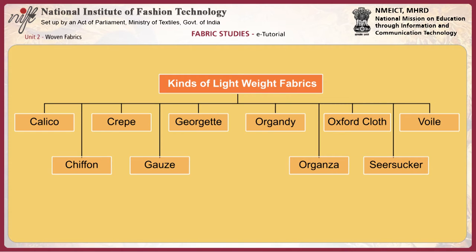Light weight fabrics are very thin and light, weighing less than 4 ounces per square yard. These fabrics, if made of natural fibres, are much softer and possess good drape. They are used for making tops like shirts, blouses, dresses, linings and home furnishings like bedsheets and sheer curtains. These are the different kinds of lightweight fabrics.